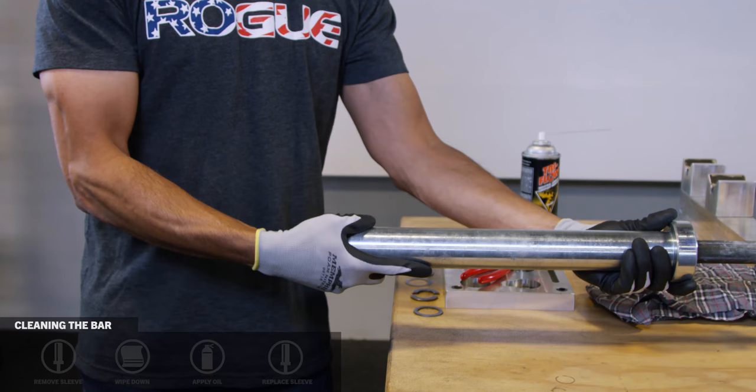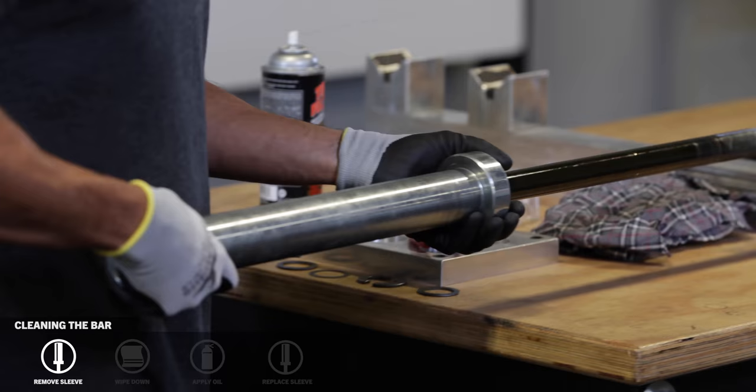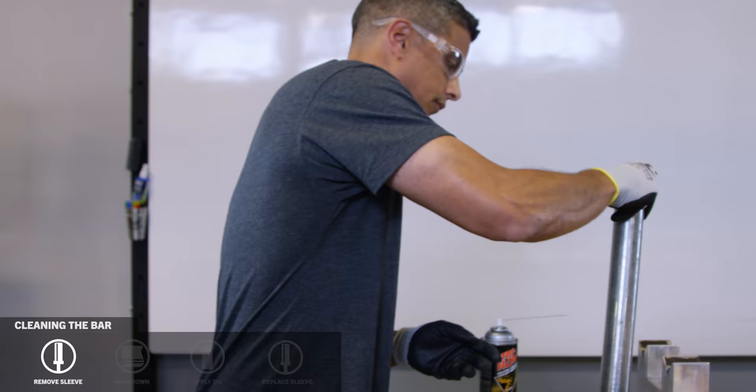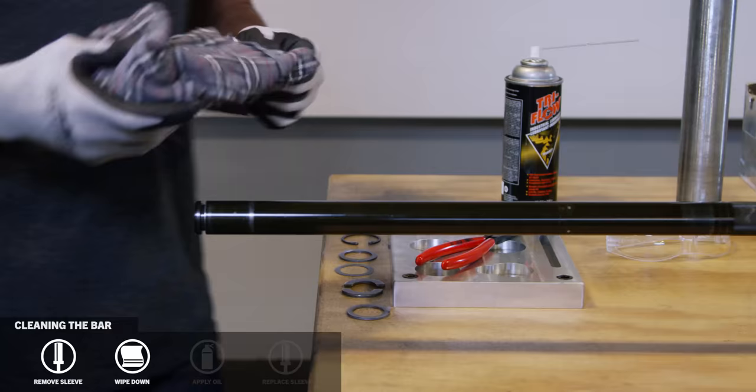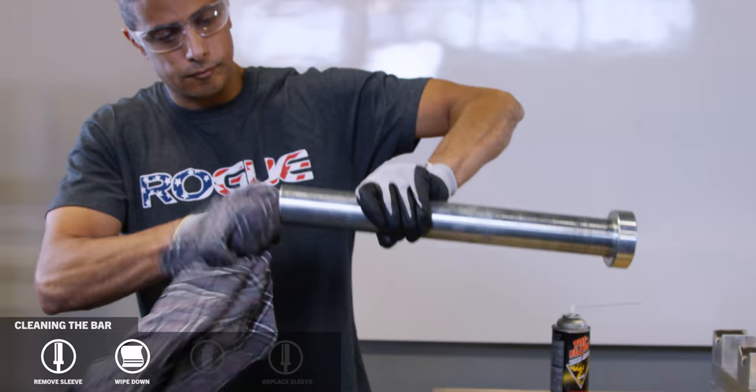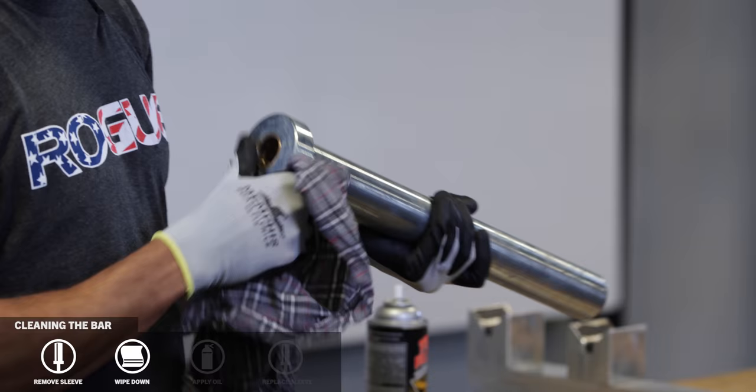At this point, you need to remove the sleeve and set it to the side. Wipe any of the old lubricant, any dirt or chalk off of the shaft. And then do the same thing to the bushings at each end of the sleeve.